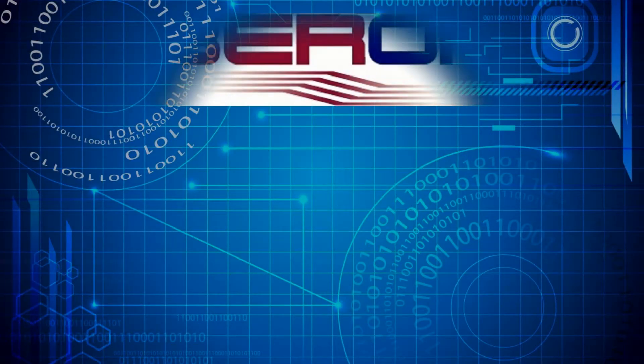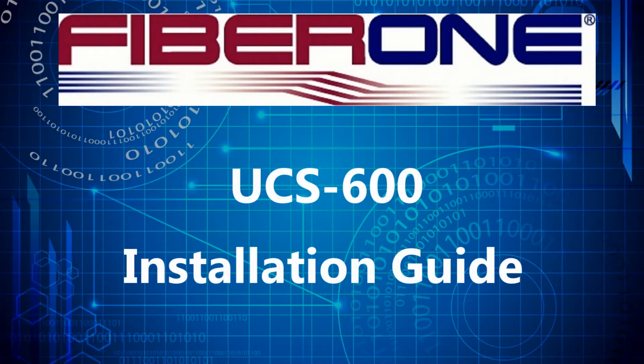In this short video, Fiber One will demonstrate how to install a Universal Connectivity System Chassis, UCS-600, and associated fiber cassettes prior and after splicing the cassette.